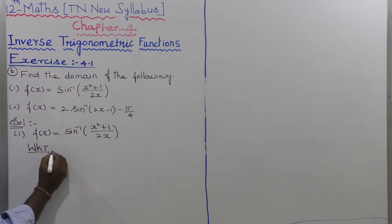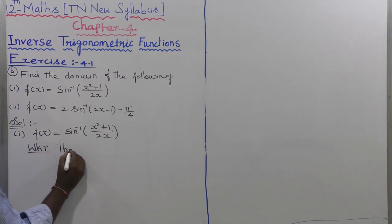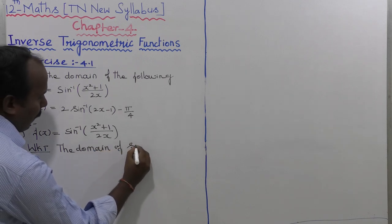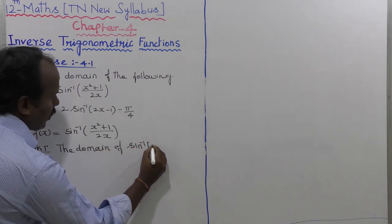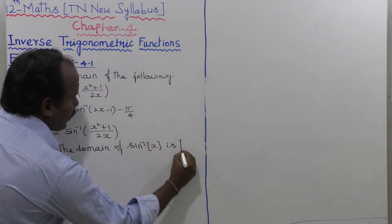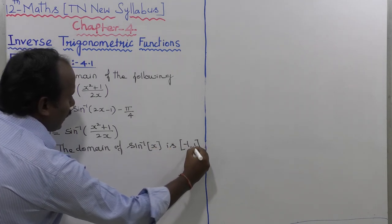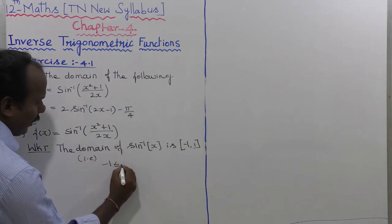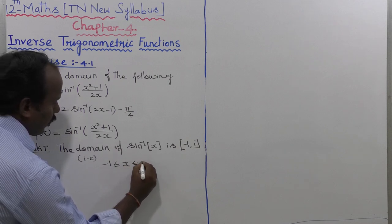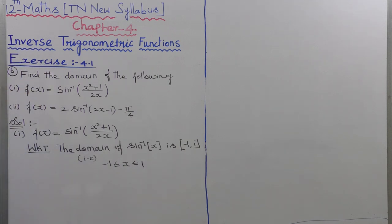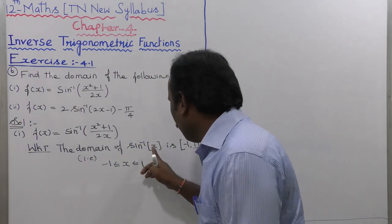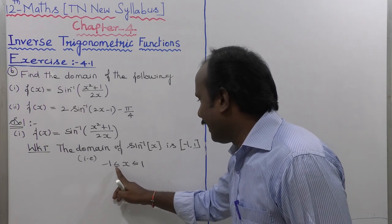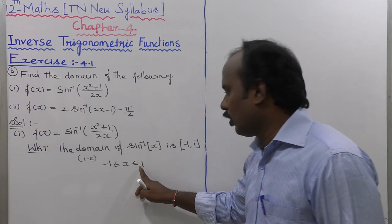We know that the domain of sin inverse of x is the closed interval minus 1 to plus 1. That is, minus 1 is less than or equal to x is less than or equal to 1. So for sin inverse of x, the domain value is minus 1 to plus 1, that is minus 1 less than or equal to x less than or equal to plus 1.